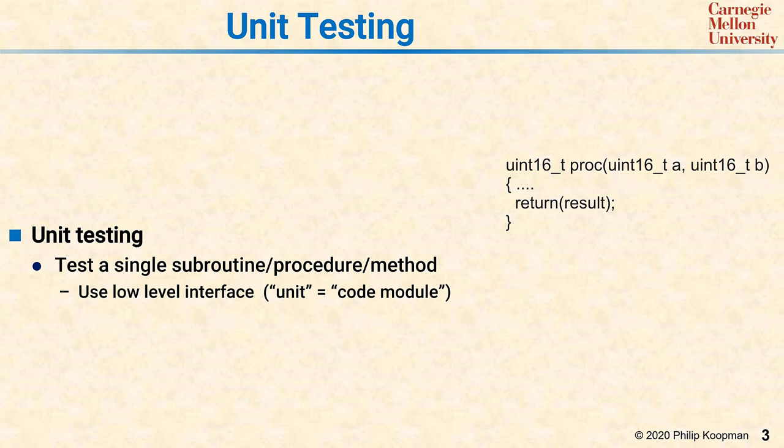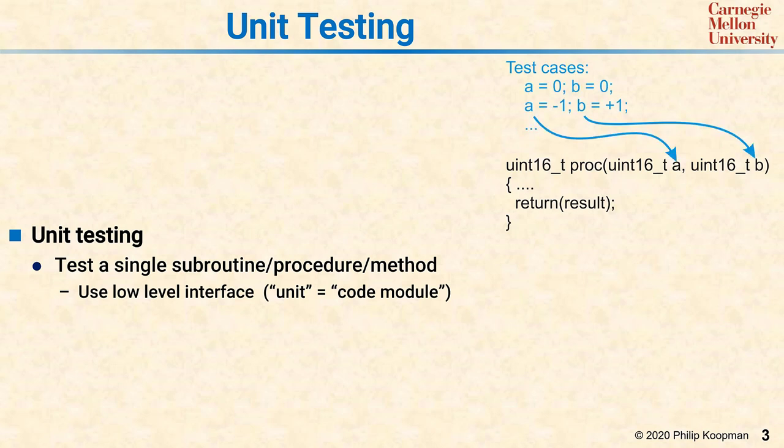Unit testing involves testing a single subroutine, procedure, method, or other standalone chunk of code. It uses a low-level interface, so you can think of a unit as being a code module. Here's an example of a subroutine that takes two inputs and produces one output. A unit test would test several combinations of inputs — for example, a equals zero and b equals zero is one unit test, and a equals negative one, b is plus one is a different unit test.